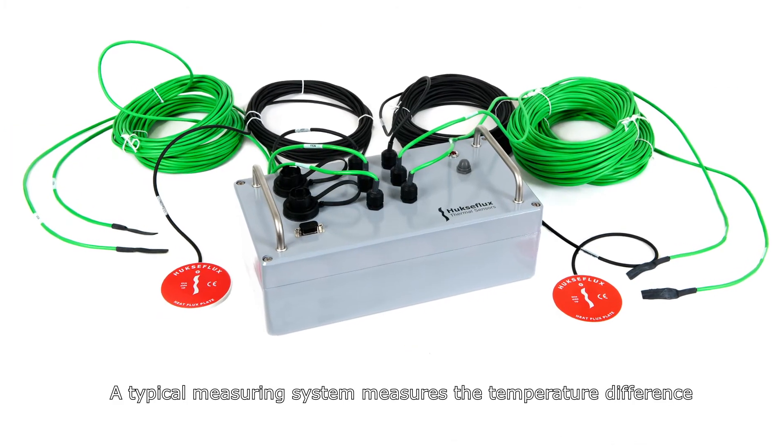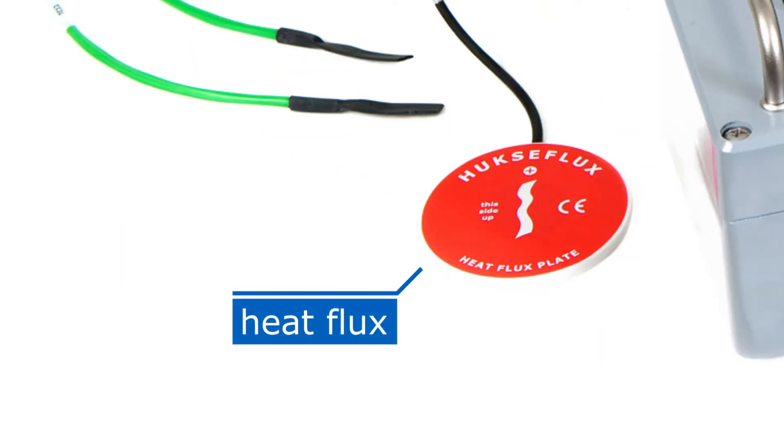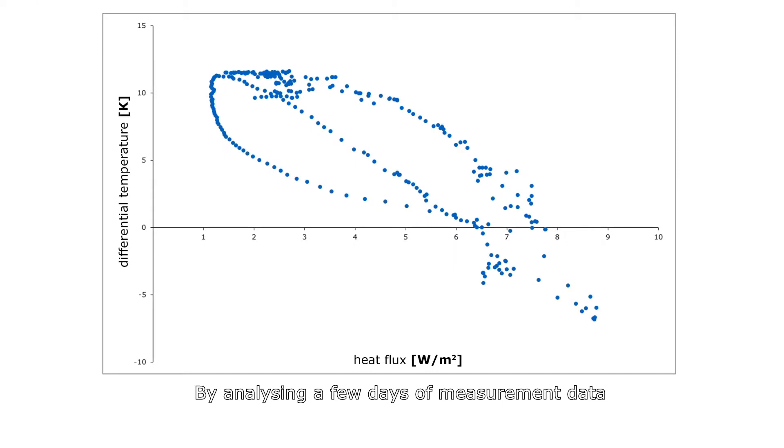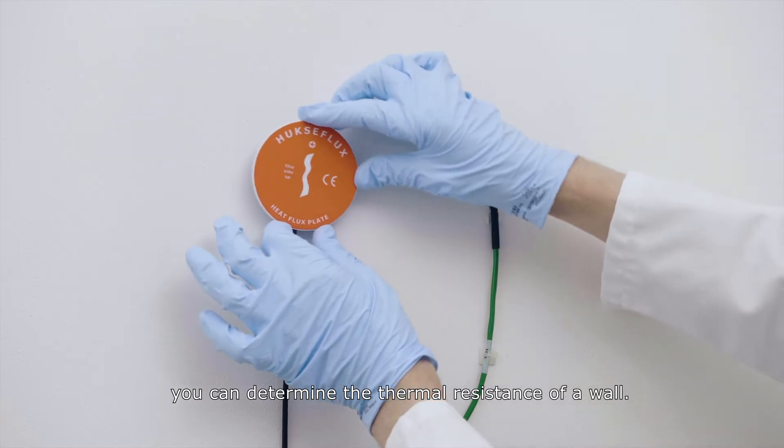A typical measuring system measures the temperature difference and the heat flux. By analyzing a few days of measurement data, you can determine the thermal resistance of a wall.